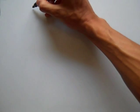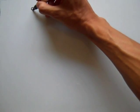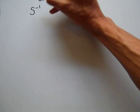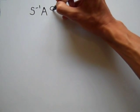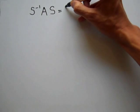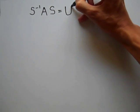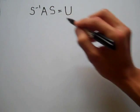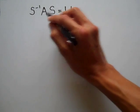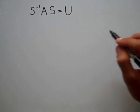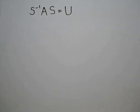First I'm going to set up the similarity relationship between A and U. For similarity, the inverse of S times A times S is equal to unitary matrix U. S is some other matrix that allows this relationship between A and U — that is, A is similar to U through S.